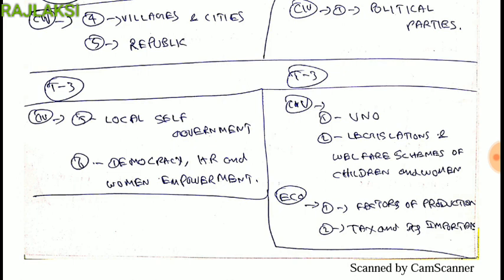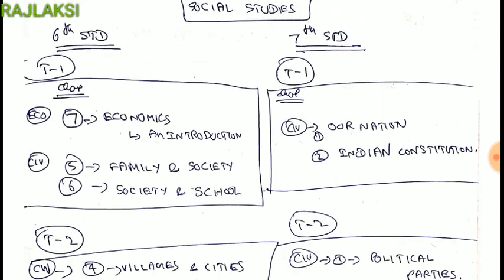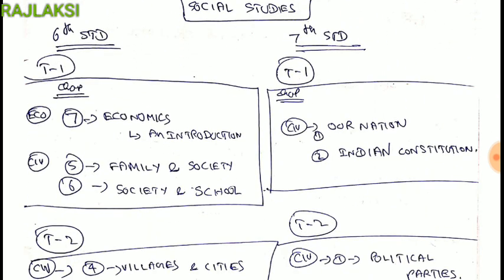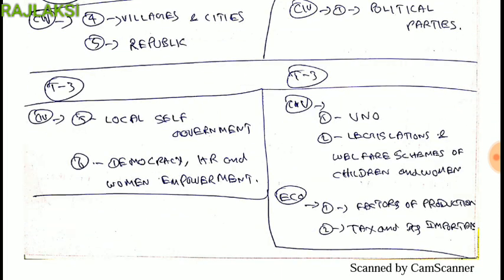Term 2: legislation and welfare schemes of children and women. Economics: factors of production, tax and its importance. So, this is day 7 and day 8 — the 6th and 7th social studies covering civics and economics.